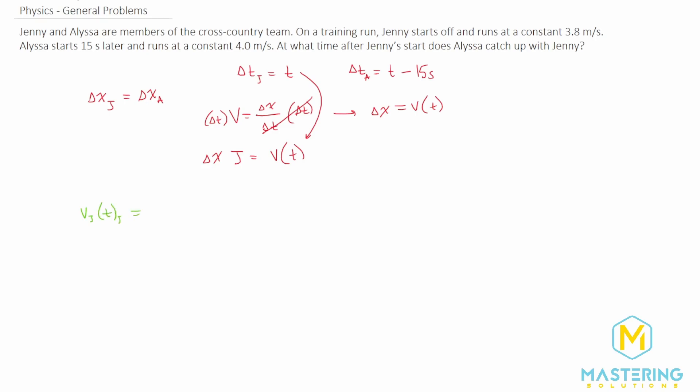Then we're going to set that equal to Alyssa. Alyssa's delta x is velocity times t minus 15 seconds. So we have velocity for Alyssa times t minus 15 seconds. Now we have our equation where it will tell us at what point will the distance they have ran be the exact same.